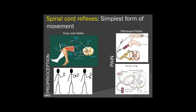Another type of reflex in the spinal cord relates more to our pain sensations — it's called the withdrawal reflex. This reflex is simply the idea that if you step on something or touch something sharp or hot, the intention is not to stay on that sharp or hot object — it's protective. The sharp or hot object stimulates a neuron to come into the spinal cord and stimulate other nerve cells to eventually cause a motor neuron to come out to stimulate the muscle, causing the finger to withdraw from the sharp or hot object.